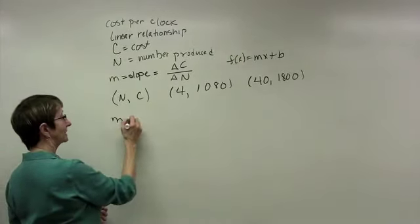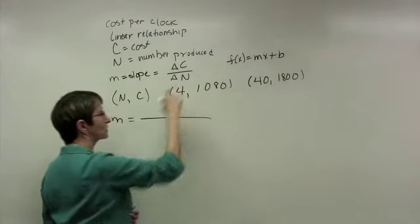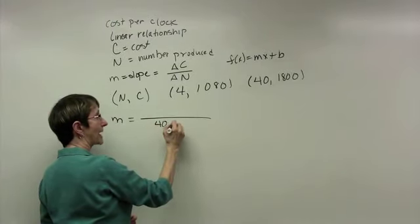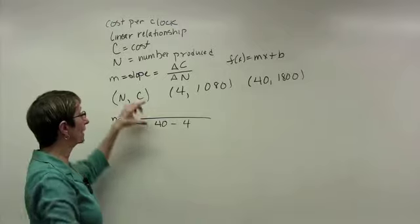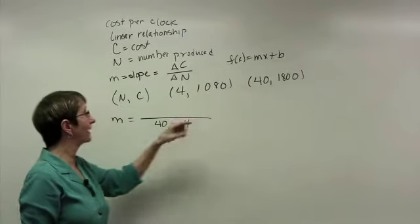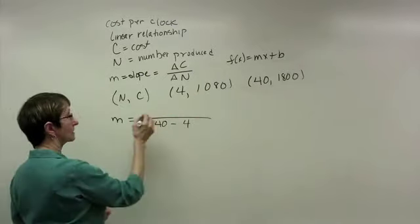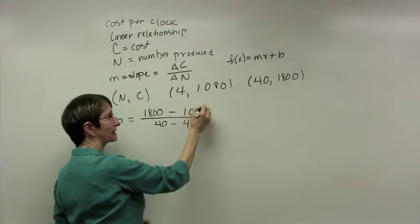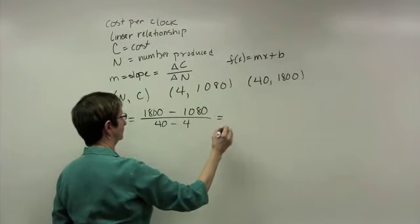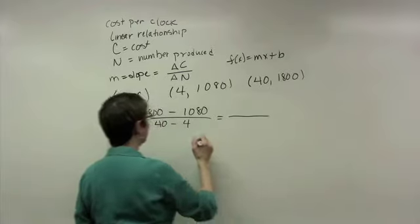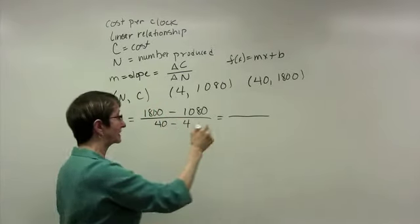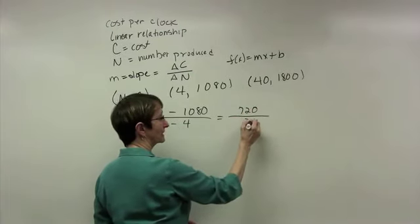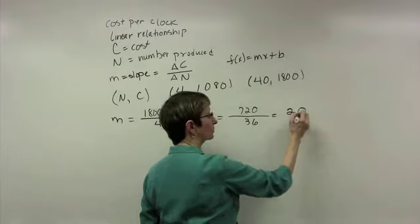So m is equal to, in the denominator, I have the change in the number of clocks, so that will be 40 minus 4. In the numerator, I need the y value or the cost value that goes with 40, so that's $1,800 minus the y value for 4 is $1,080. When I subtract $1,800 minus $1,080, I get $720, 40 minus 4 is 36, so this is equal to $20.